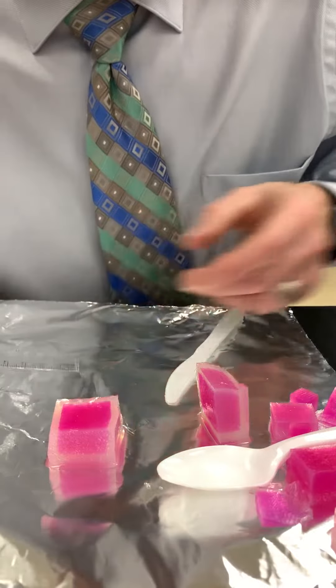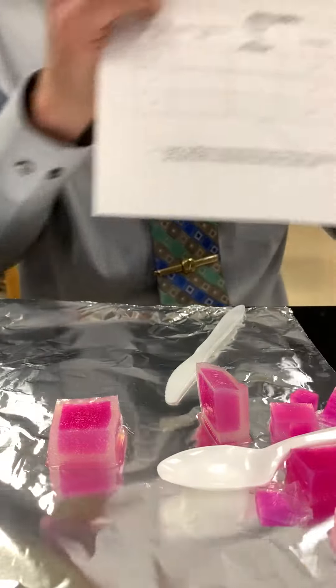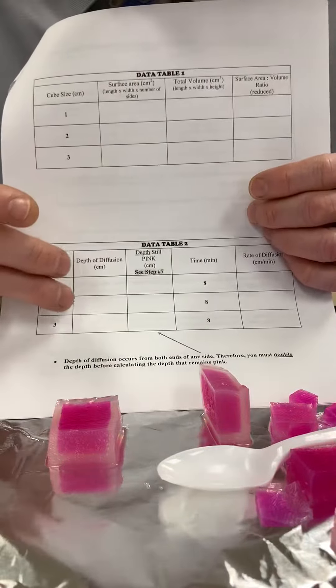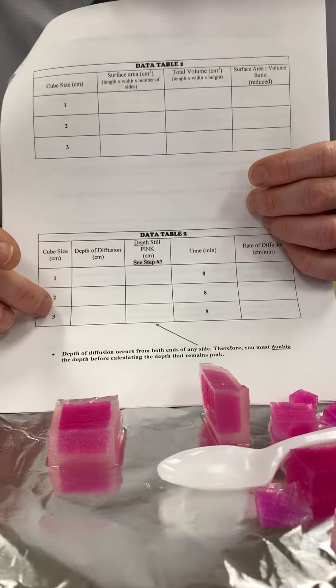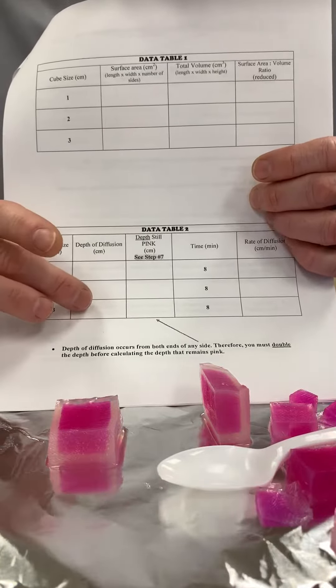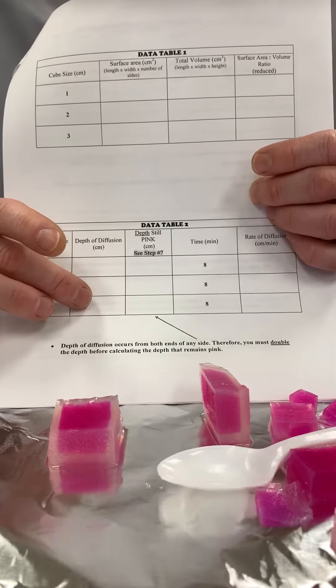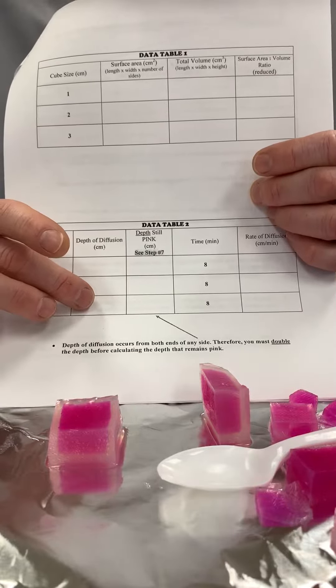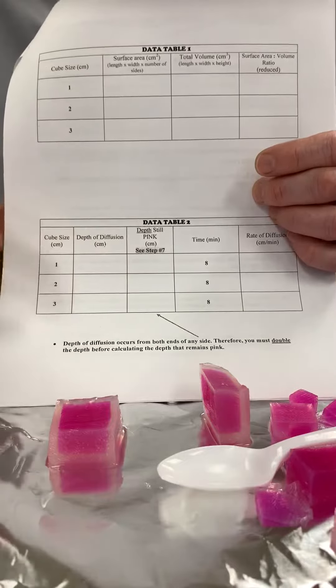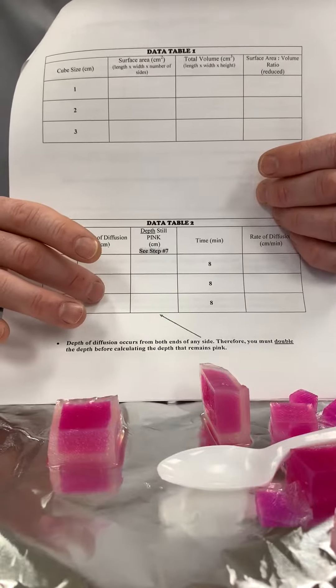So on my data table right here, where it's the large cube, cube size 3x3x3, I'm going to put 0.35. I could put 0.4, but I try to be as precise as I possibly can, so 0.35 would be perfectly fine.